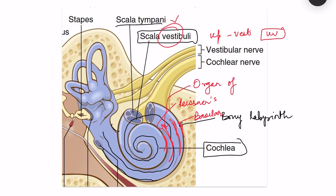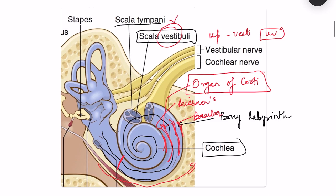The organ of Corti is present on the scala media. The hair cells responsible for hearing are present in this organ of Corti. Throughout the length of the cochlea in a transverse manner there is organ of Corti in the scala media, so sense organs are present throughout the length.